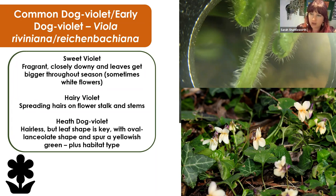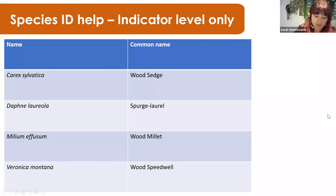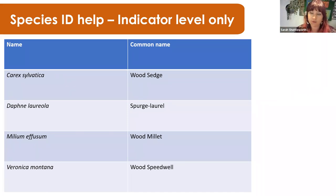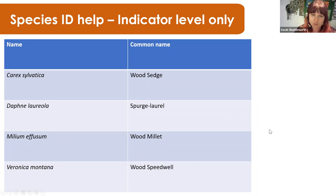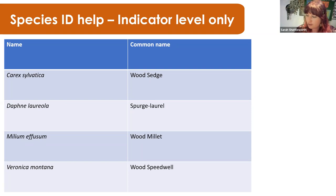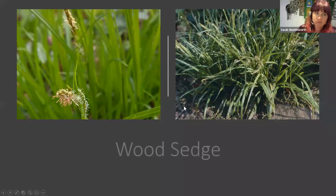That covers all the species at wildflower level. Now we're going to go through an additional four species that are at indicator level only. It might be you're thinking you'll stick to wildflower level — that's absolutely fine. But maybe at some point you can re-watch this section for those additional species that'll take you to the next level, which is something we really want to encourage.